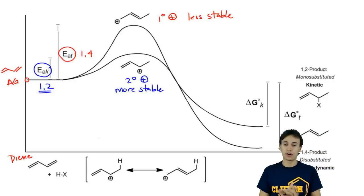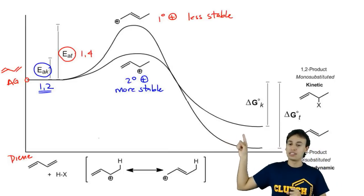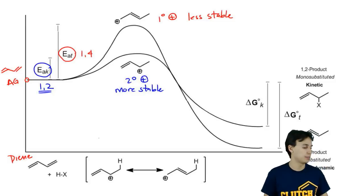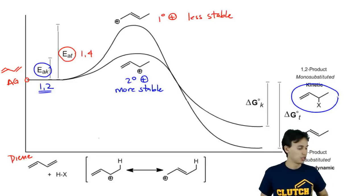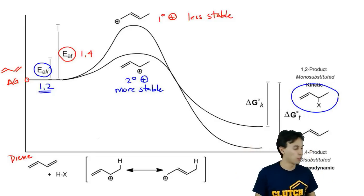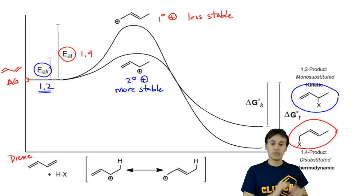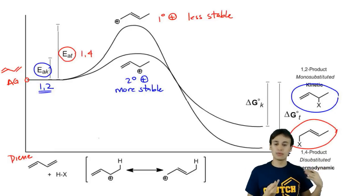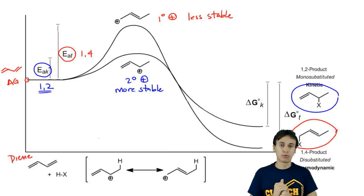So that's the first part. But notice that as we move to the products, things kind of change. Because what we see is that even though the secondary intermediate is more stable, look at the reaction product that it produces. We wind up getting an alkyl halide that looks like this. Whereas for my thermodynamic product or my 1,4, I get an alkyl halide that looks like this. The alkyl halides have equal energies, very similar energy. Halogens do not benefit from being primary or secondary. So that's not the important part.